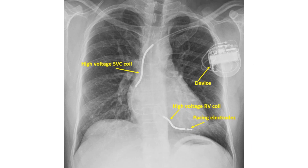The x-ray picture shown here depicts a high voltage coil in the superior vena cava. There is another high voltage coil in the right ventricle. ICDs can also give backup pacing if there is post-shock bradycardia. Pacing electrodes are seen at the tip of the lead in the x-ray.